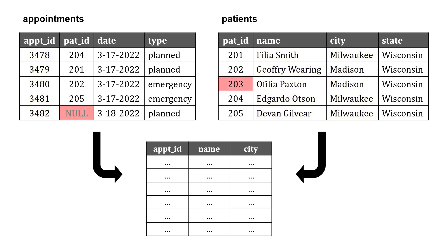Before we walk through the joins, it's helpful to know the differences in patient ID between these two tables. In the appointments table, one appointment has a null patient ID — it's missing. And in the patients table, patient 203 does not have an appointment in the appointments table. That knowledge is going to be important as we try out these joins.